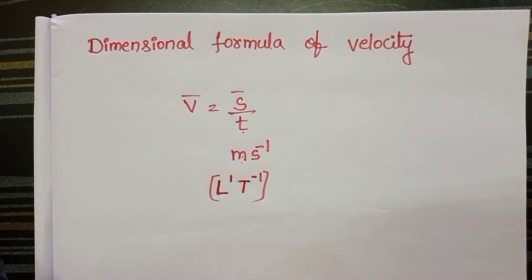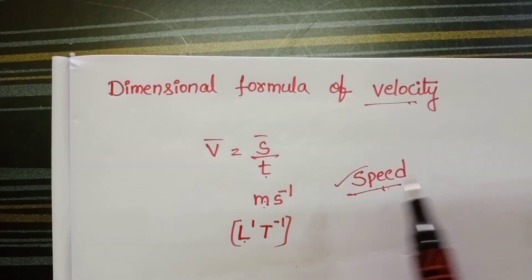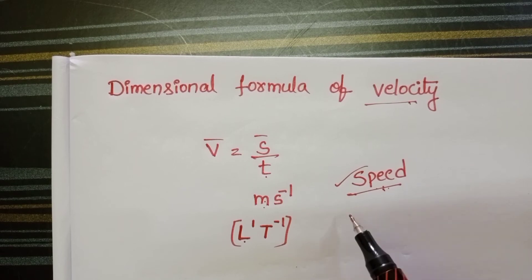Dimensional formula of velocity is L power 1 T power minus 1. Speed also has the same dimensional formula.